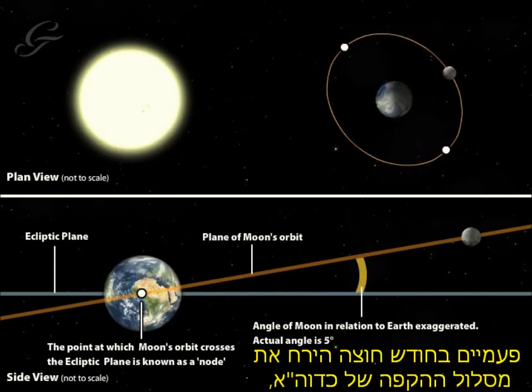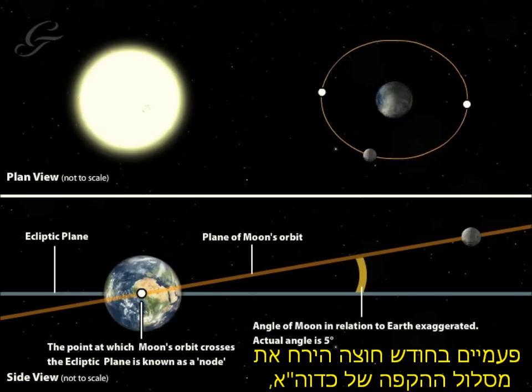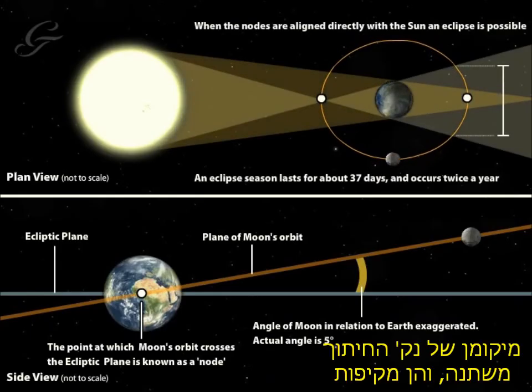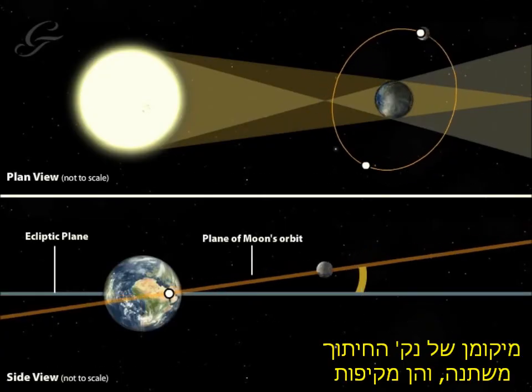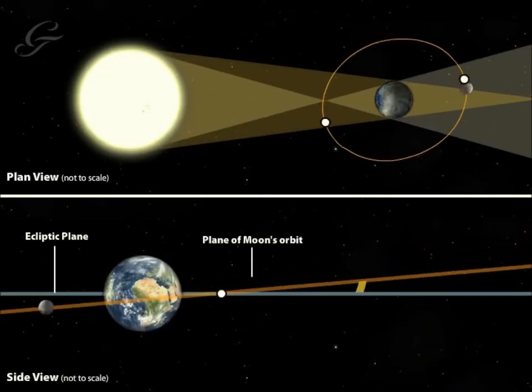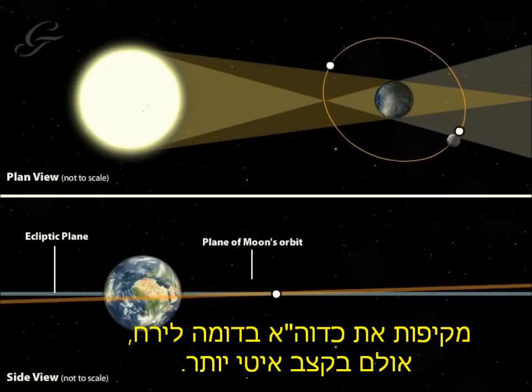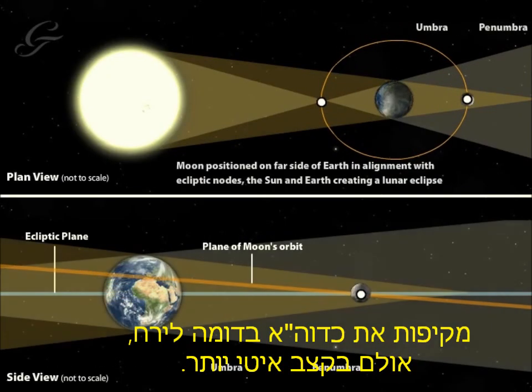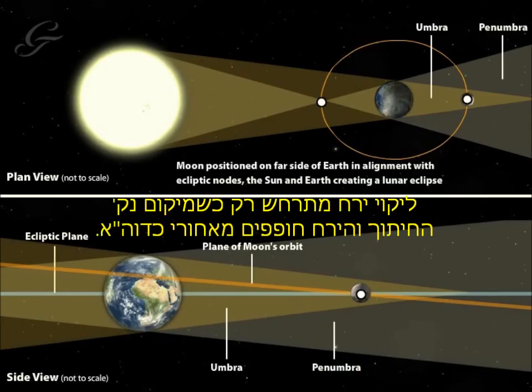Twice a month the moon passes through the plane of the Earth's orbit at points called nodes. The positions of these nodes move, orbiting the Earth in a similar fashion, but more slowly than the moon. A lunar eclipse only happens when the moon and a node coincide behind the Earth.